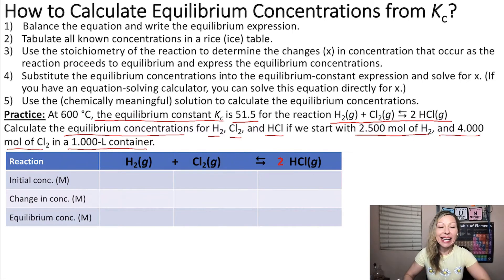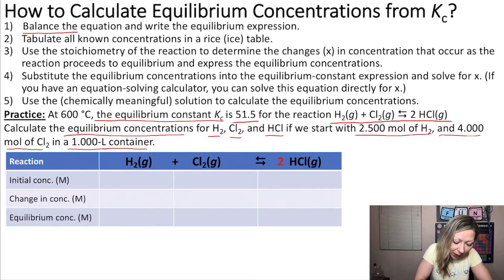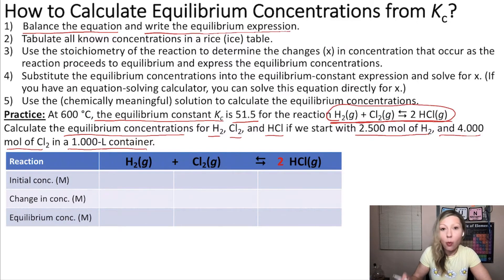Let's take a look at the steps to figure out how to solve this question. First we need to balance the equation and write the equilibrium expression. Well, if we look at the equation, it's actually already balanced. We have 1 mole of H2 and 1 mole of Cl2 gas forming 2 moles of HCl.